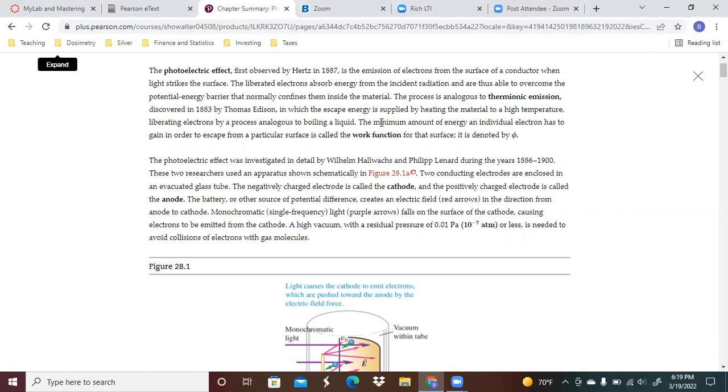The minimum amount of energy an individual electron has to gain in order to escape from a particular surface is called the work function. In other words, the work function is going to be that potential difference required in order for you to escape that particular surface. Thermionic emission basically means you just heat the material up and then the electrons have enough to escape. The photoelectric effect basically means that you're taking energy not from a heat source per se, but from sunlight or some other type of light shining on an object.